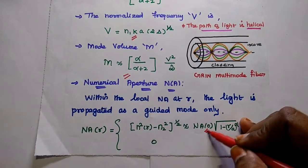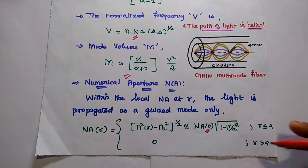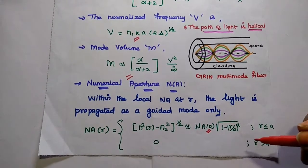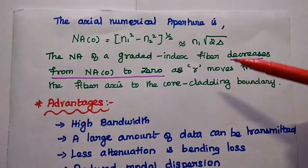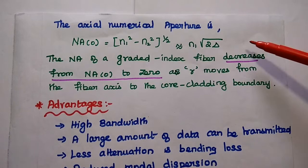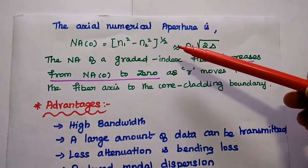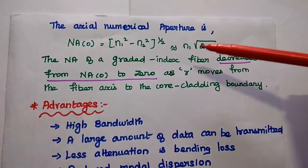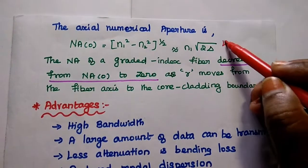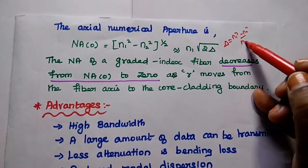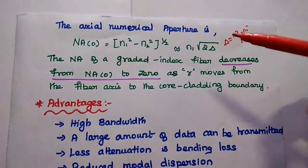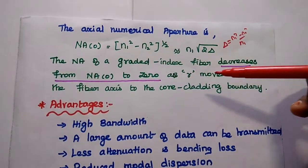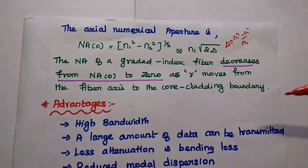If the radial distance is in the cladding region, that is beyond the core, the numerical aperture value becomes 0 — there is no light propagation. The axial numerical aperture NA(0) is given as the square root of N1² minus N2², which can be written as N1 · sqrt(2·delta), since delta equals (N1² minus N2²) / N1. The numerical aperture of a graded index fiber decreases from NA(0) to 0 as the radial distance moves from the core axis to the cladding boundary.